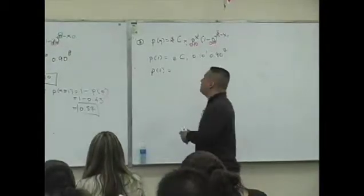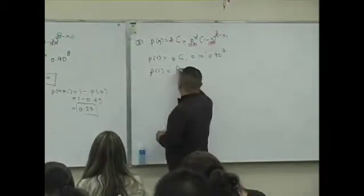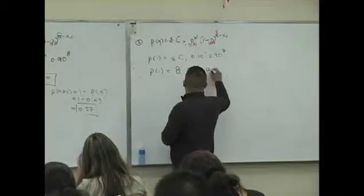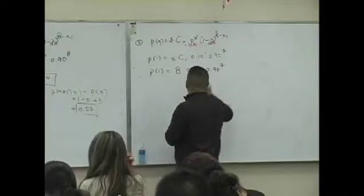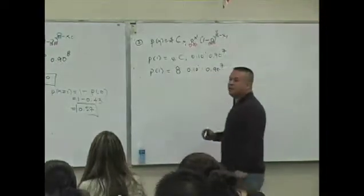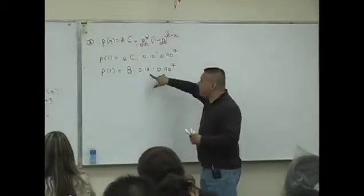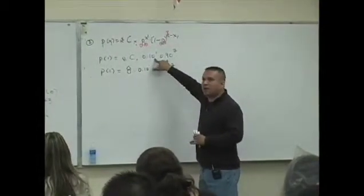Okay, you guys okay with that? So P of 1, let's simplify. What's 8C1? 8 times 0.1 to the first times 0.90 to the seventh power.